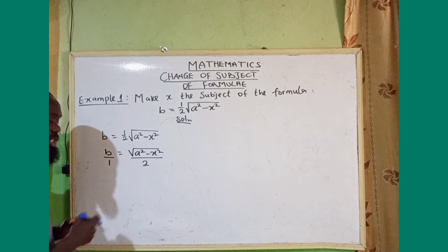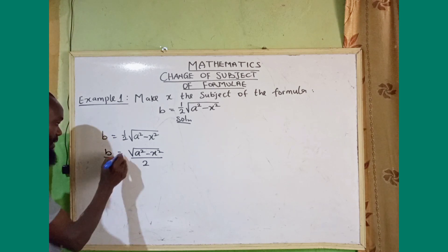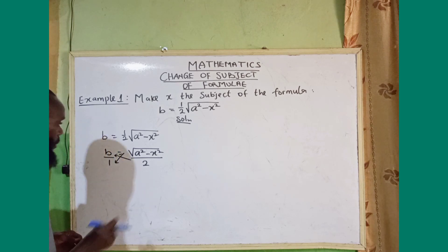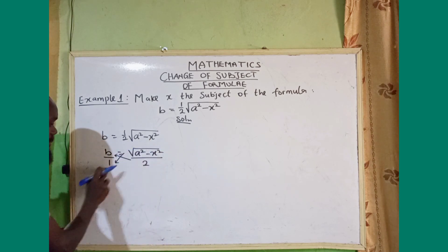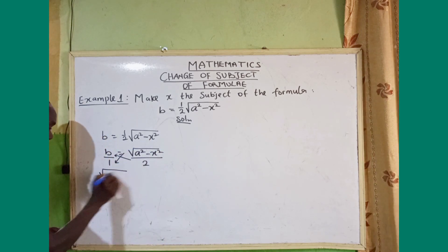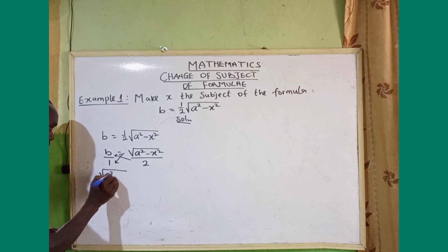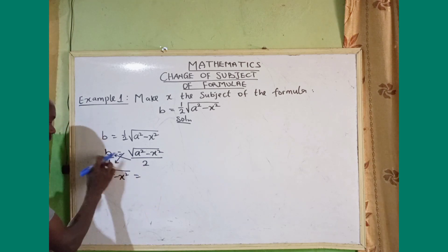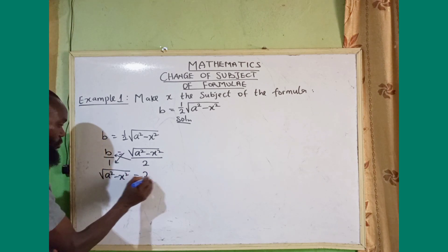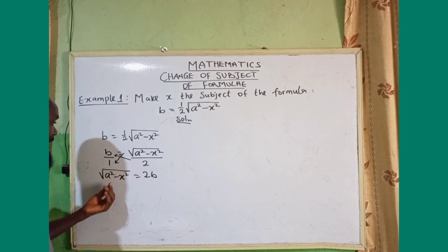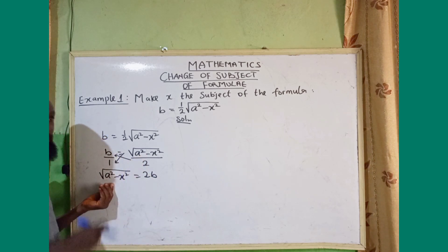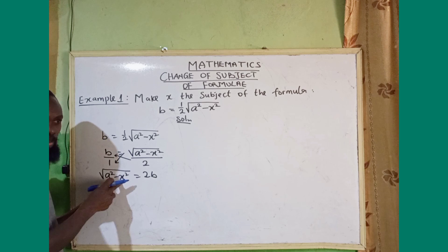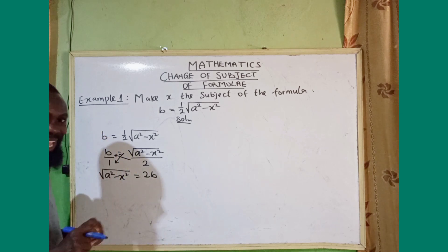The next step is to cross multiply. We multiply across: square root of a squared minus x squared is equal to two times b, giving us 2b. I'm taking this to the left hand side because it contains the unknown I'm looking for.